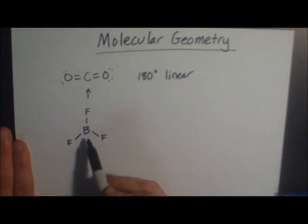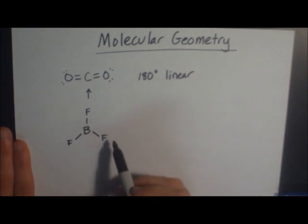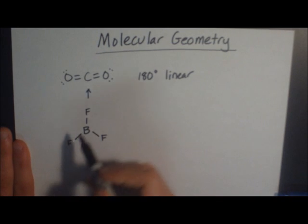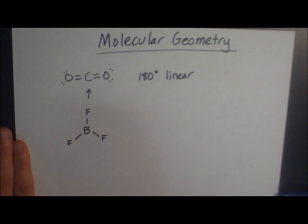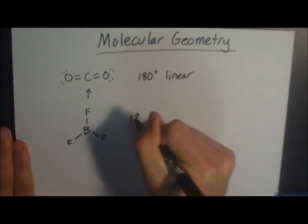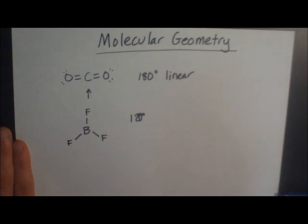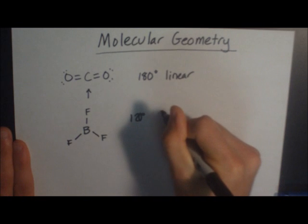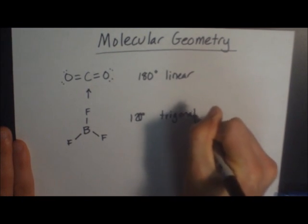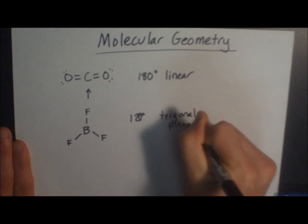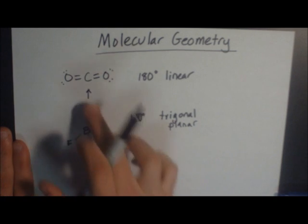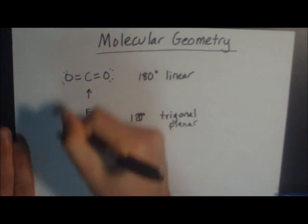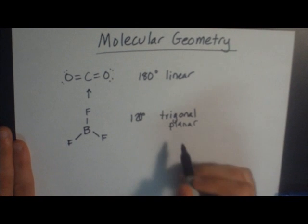You have a central boron with three fluorine atoms on the outside. I drew it like this because all the fluorines are equally as far apart from each other as possible. So in this kind of molecule, you have a 120 degree bond angle. The shape is trigonal planar. All the fluorines are as far from each other as possible — you have a 360 degree circle divided by three, which is 120. Trigonal planar.